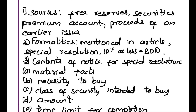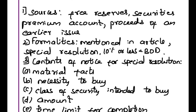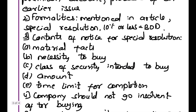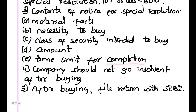Formalities for buyback: it should be mentioned in the articles that the company can buy back their shares. A special resolution should be passed regarding that. If the shares being bought back are 10% or less, the board of directors can approve it in their meeting. The notice for special resolution should contain: material facts of buying the shares, necessity to buy, class of security they intend to buy, amount or cost of the share, time limit for completion, a declaration that the company will not go insolvent after buying the shares, and after buying, file with the Securities Exchange Board of India.